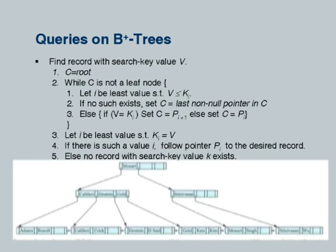That is for a point lookup. But a B+ tree also supports a range query: given a range of values, find all records in that range. For example, find all instructors whose names lie between Einstein and Mozart. What I will do is take the bottom end of the range, which is Einstein. Einstein is less than Gold? Yes. So I follow that pointer and land up at Einstein.